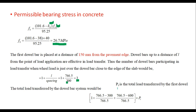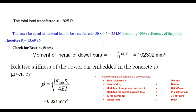Three dowel bars participate in load transfer. If Pt is the load transferred by the first dowel bar, the total load transferred by the group is: Pt × [1 + (L−300)/L + (L−600)/L] = 1.825 × Pt. Setting this equal to 25 kN gives Pt = 13.69 kN.